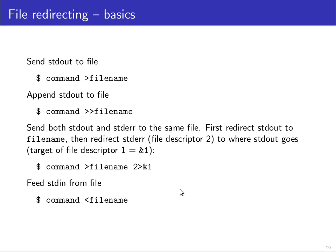It's also possible to connect standard input and standard output with files rather than the terminal. If you write a command followed by greater-than and a filename, the standard output of the command will be written into that file. A double greater-than sign appends to the file, whereas a single greater-than sign truncates the file to length 0 and rewrites it from the start if the file already exists.